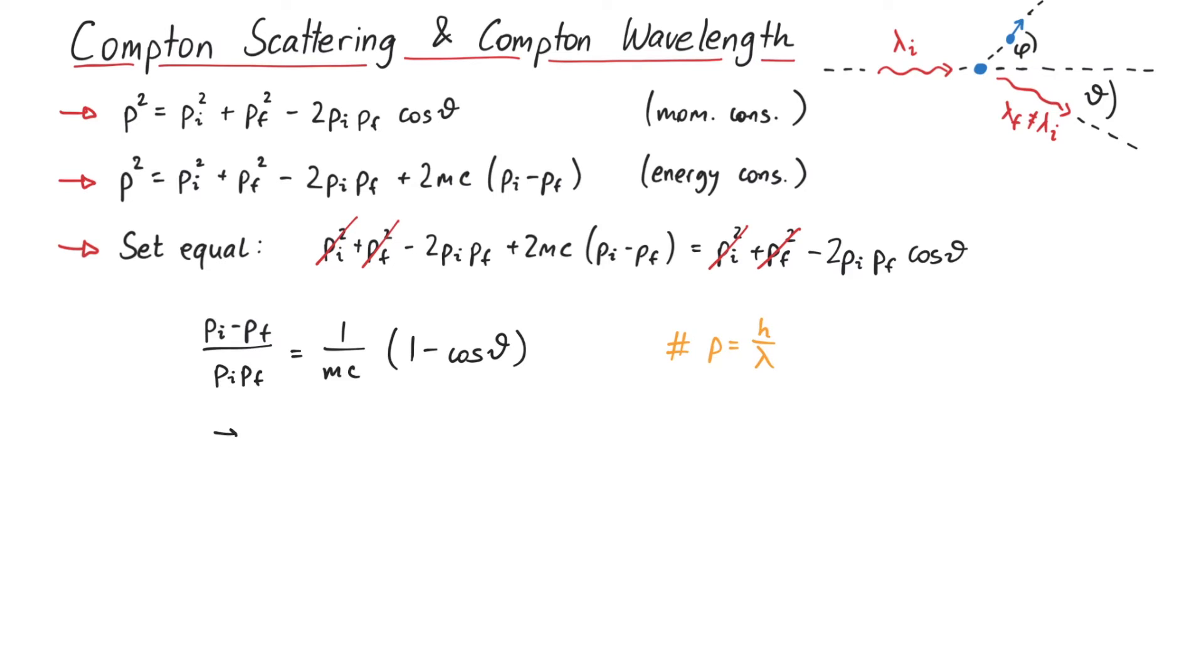we get the result that the difference between the final wavelength and the initial wavelength is given by a constant h over mc times one minus the cosine of theta. This constant in the front is called the Compton wavelength, and it's a different value for each particle.